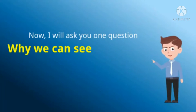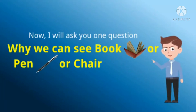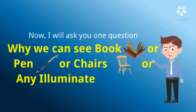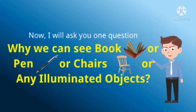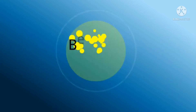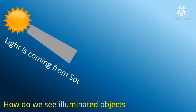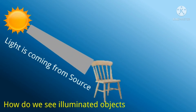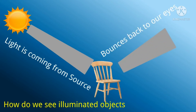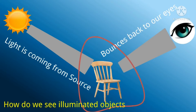Now I will ask you one question. Why can we see a book, or a pen, or chairs, or any illuminated objects, although they are not producing light? It is very simple. Take an example: the sun is a luminous object, so the sun can produce light. Light is coming from the sun and it is falling on the chair.